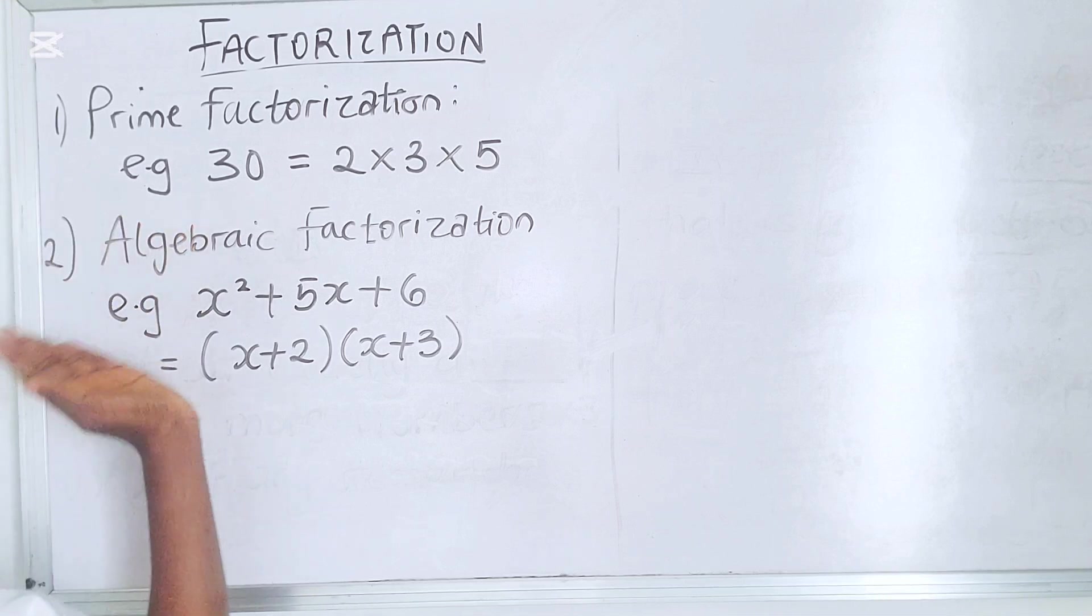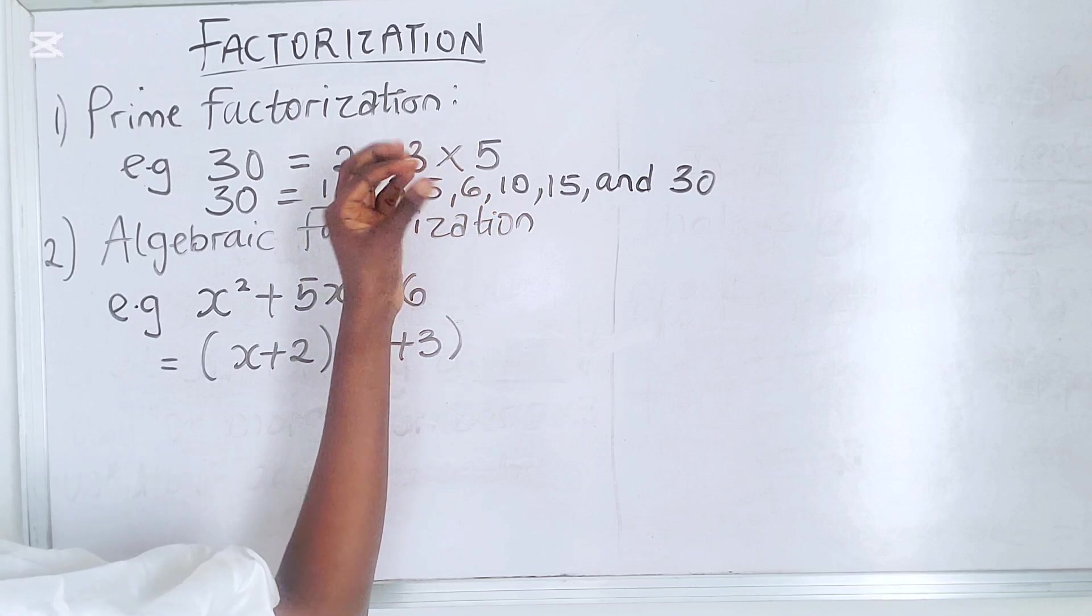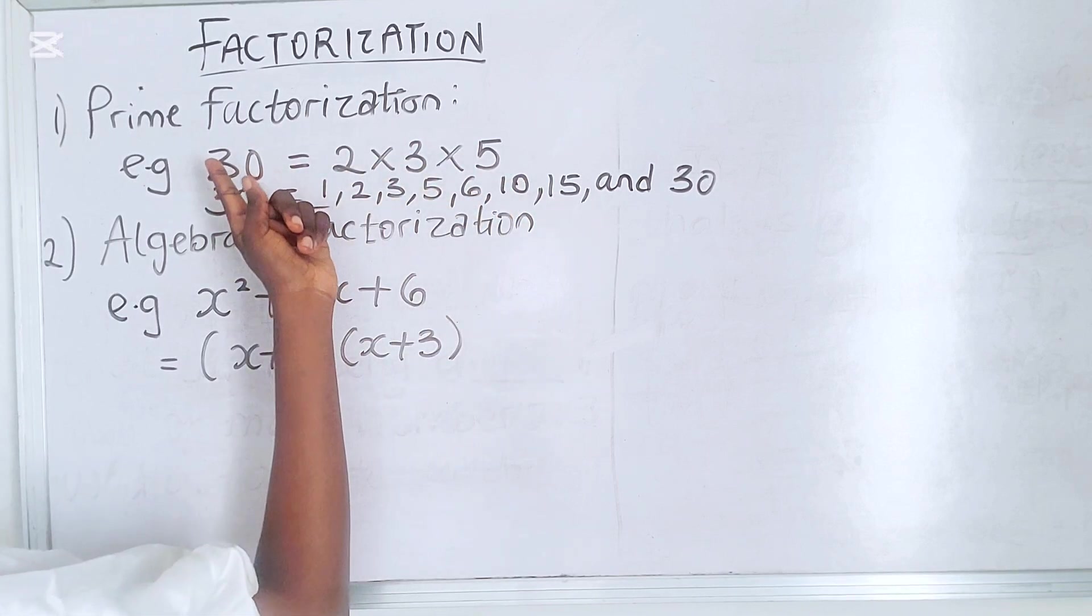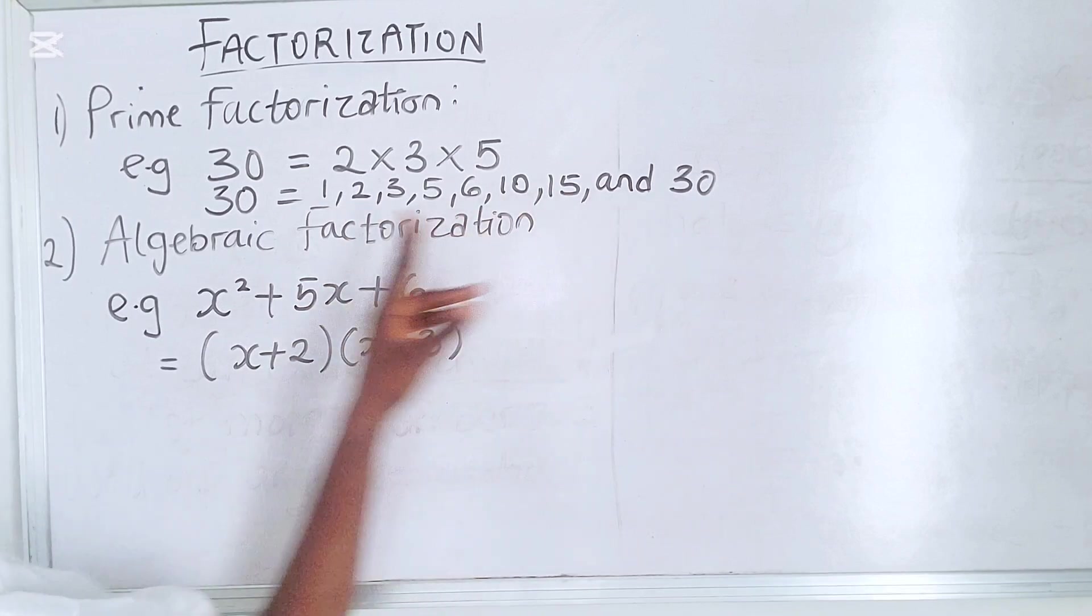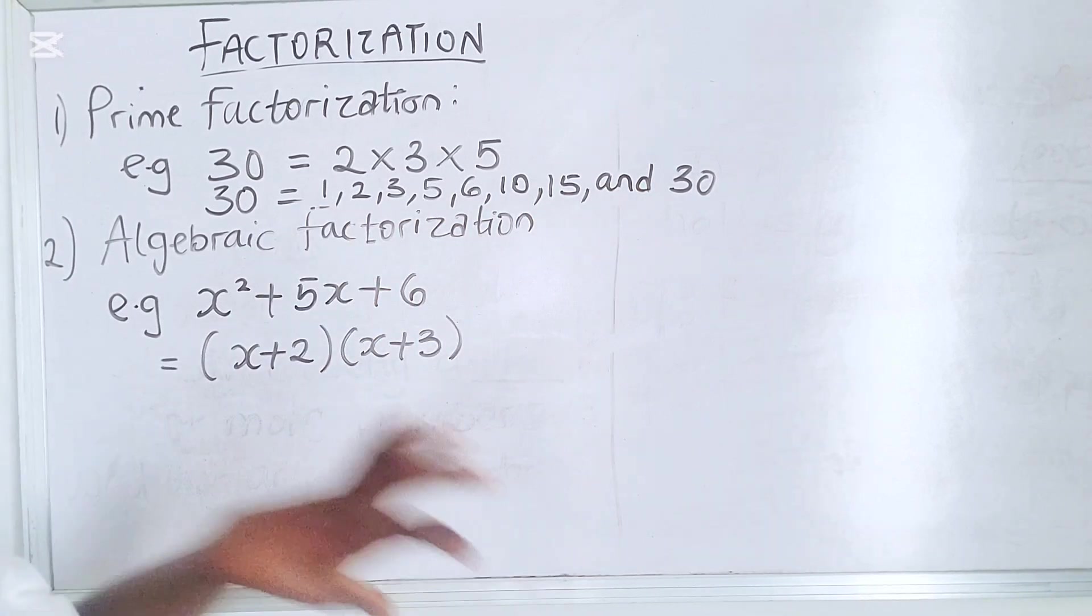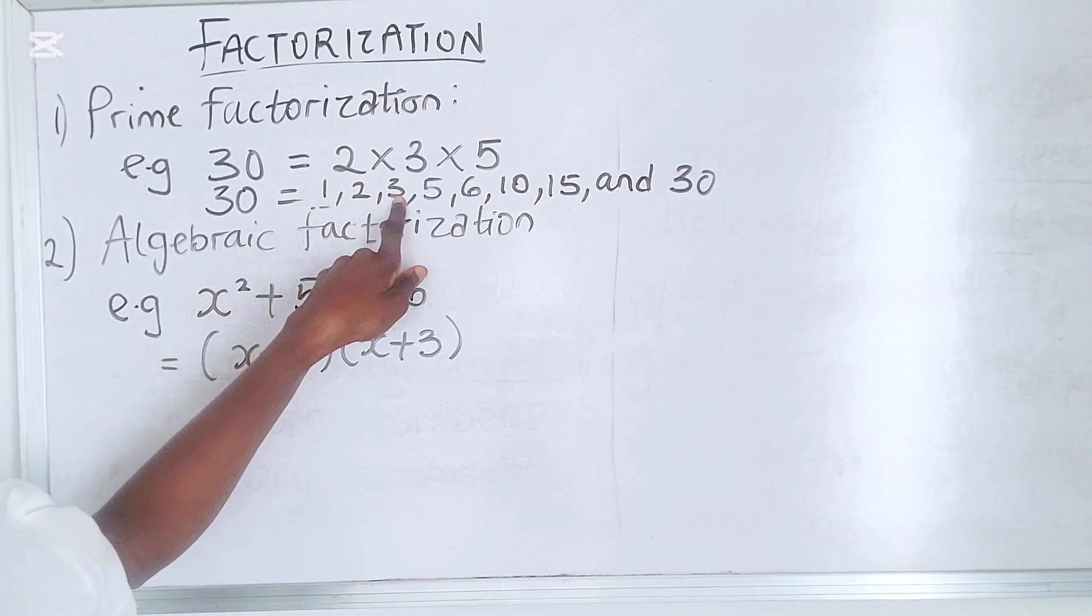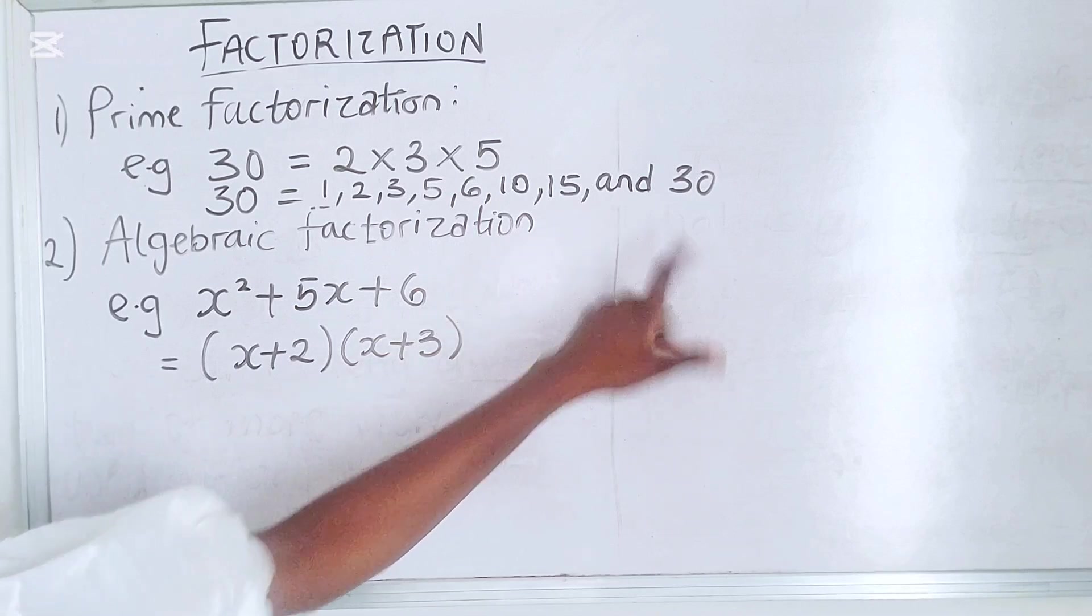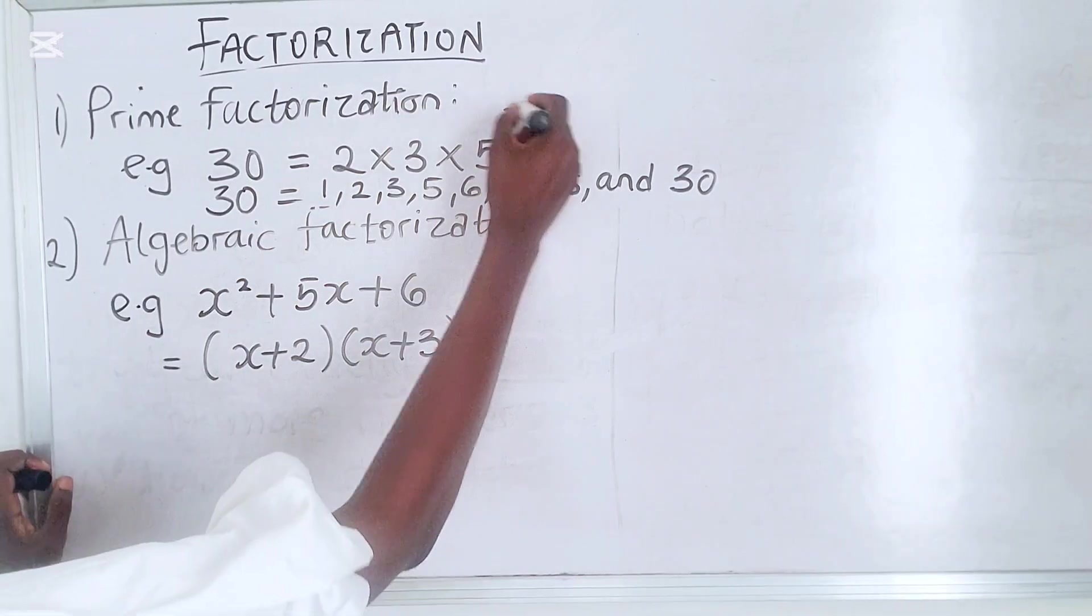For the prime factorization, it's your number. These 2 times 3 times 5 are factors of 30 because when you multiply them, you get 30. Also, these are all the factors of 30. We are asked to find the prime factors. It is definitely the prime numbers which are 2, 3 and 5 in this case. The rest are not prime numbers. So these are prime factors of 30.